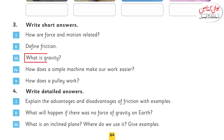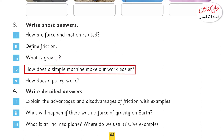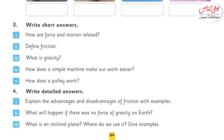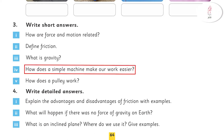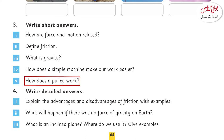Question number 3: what is gravity? The force of attraction of the Earth that pulls everything towards its center is called gravity, as we have already studied in this chapter. Question number 4: how does a simple machine work? The answer is: a machine makes our work easier by changing the amount and direction of a force. Question number 5: how does a pulley work? In a pulley, a load is tied to one end of the rope, and the rope is pulled to lift the load.